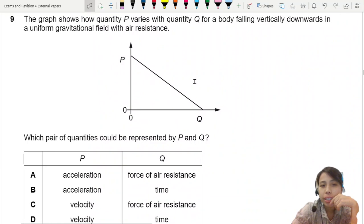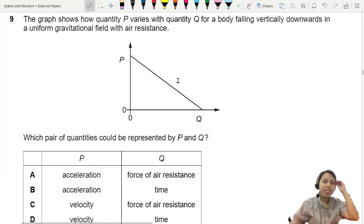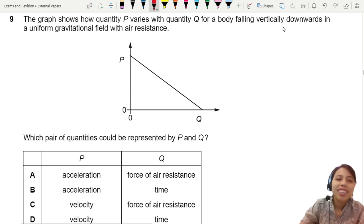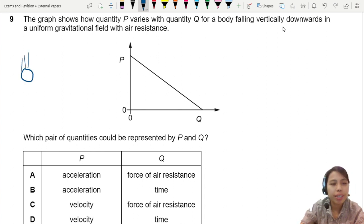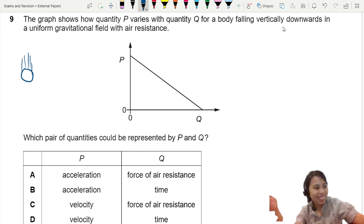The graph shows how quantity P varies with quantity Q for a body falling vertically downwards in a uniform gravitational field with air resistance. So you imagine there's this ball falling down. But we don't know what this graph is.